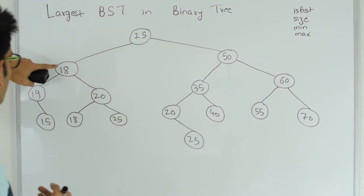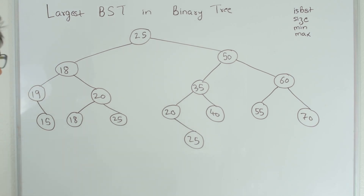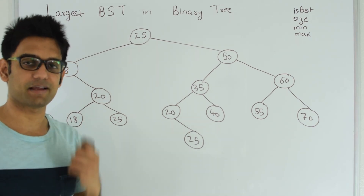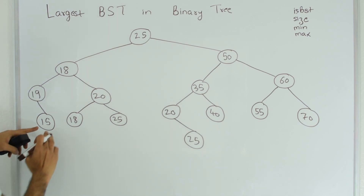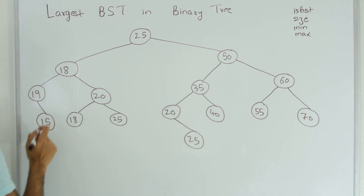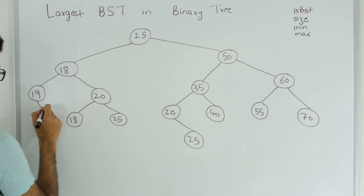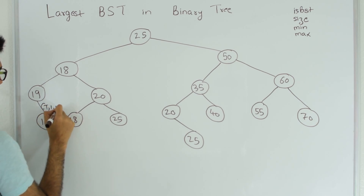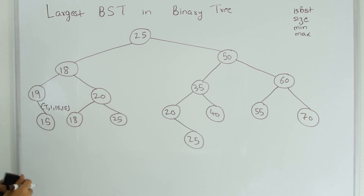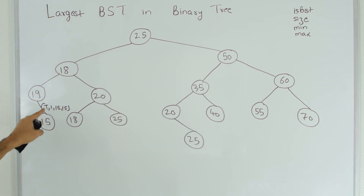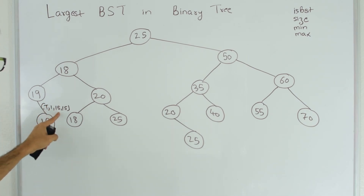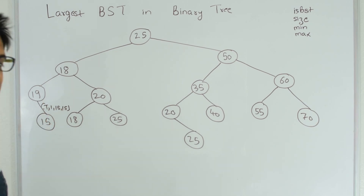We start from 25, go to 18, go to 19, and then reach node 15. Post-order traversal is left, right, then visit. At node 15, it returns four values to 19: true, 1, 15, 15. This means the subtree with 15 as its root is a binary search tree — that's why it's returning true. The 1 is the size of that BST, and 15 is both the minimum and maximum value in this subtree.